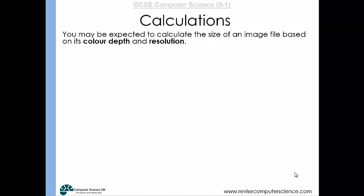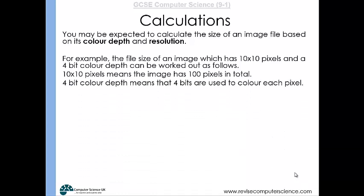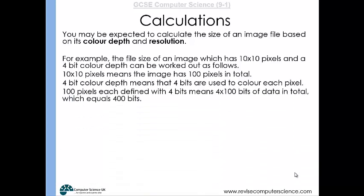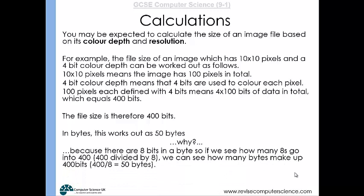In your exam you might be expected to calculate the size of an image file based on its colour depth and resolution — it sounds scary but it's very simple. For example, to find the file size of an image which has 10 by 10 pixels and a 4-bit colour depth: 10 by 10 pixels means 100 pixels in total. A 4-bit colour depth means every pixel is represented by 4 bits. So 100 pixels each defined with 4 bits gives 4 times 100, which is 400 bits. To convert to bytes, since there are 8 bits in a byte, we do 400 divided by 8, which gives 50 bytes.